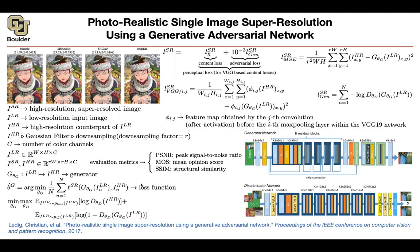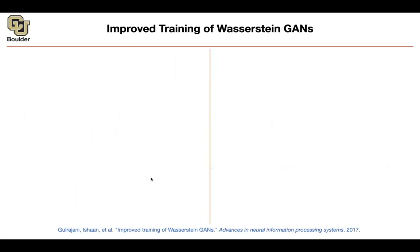Now that we saw an application, let's go ahead and play around with the loss function. Let's go back to Wasserstein GANs and try to improve its training process.